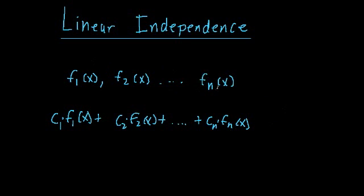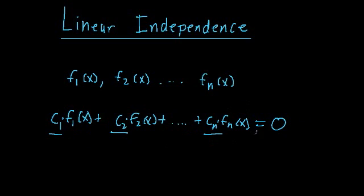To see if this set of functions is linearly independent or linearly dependent, we take our linear combination and set it equal to 0. If we can find a set of values for these constants — c1, c2, cn, etc. — that make everything on the left-hand side cancel out so that 0 equals 0, then we say the set of functions is linearly dependent. If we search and find that there are no values that make all these constants cancel out, then we say the set is linearly independent.